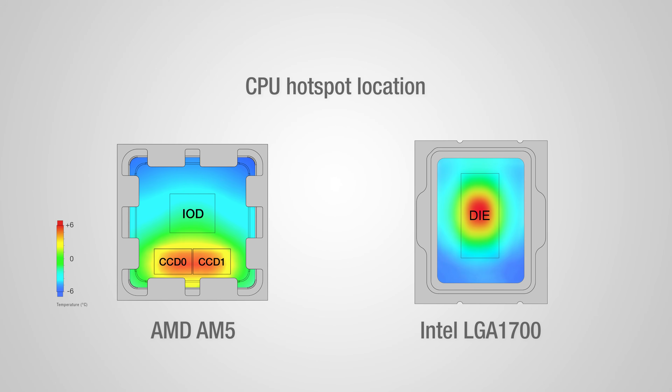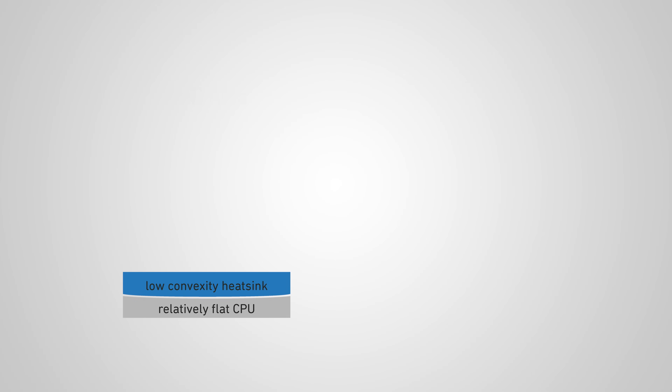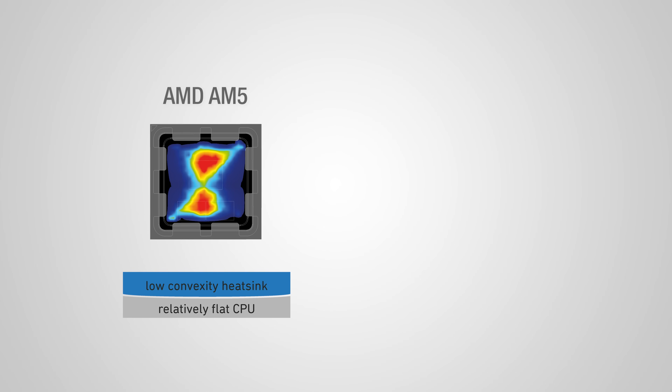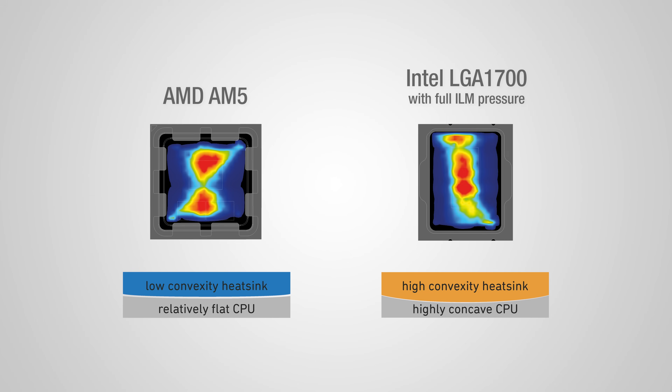These differences make designing a cooler that offers optimal performance on both platforms challenging. To achieve good contact, the shapes of the contact surfaces of the heatsink and the processor should fit each other as precisely as possible. This means that a relatively flat heatsink base will show the best fit on a relatively flat CPU such as AMD AM5, whereas a highly convex heatsink base is required to achieve a good fit on highly concave CPUs such as LGA1700 with full ILM pressure.